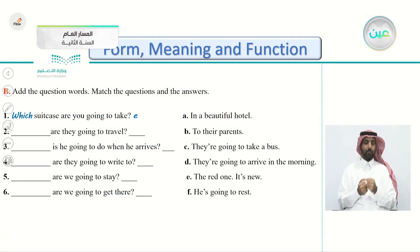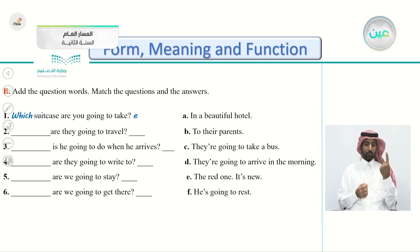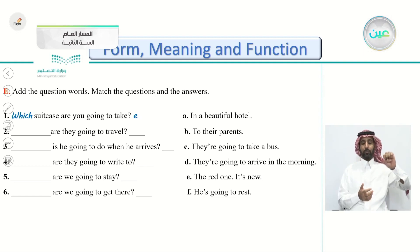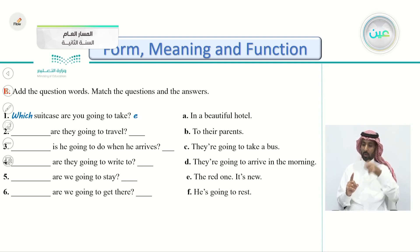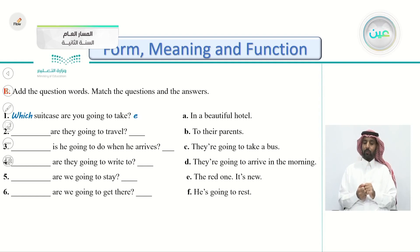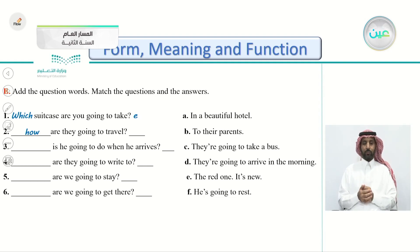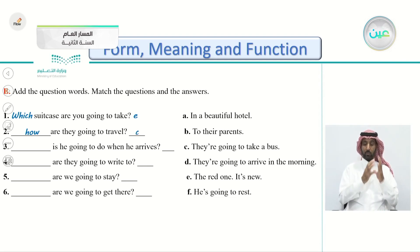Another exercise: add question words and match the questions to the answers. The first is done for you — 'Which suitcase are you going to take?' — answer E: 'The red one, it's new.' Number two: 'How are they going to travel?' — asking about the vehicle — answer C: 'They're going to take a bus.' Number three: 'What is he going to do when he arrives?' — answer F: 'He's going to rest.'